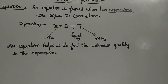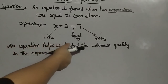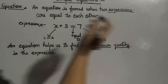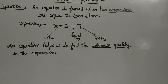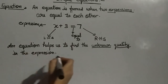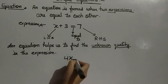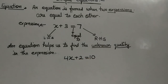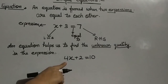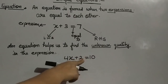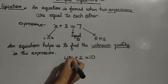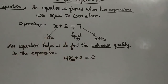The question is: why do we need an equation? An equation helps us to find the unknown quantity of the expression. Suppose I am writing 4X plus 2 is equal to 10. We know what is 4, 2, and also 10. So what is the unknown quantity here? X. X is the unknown quantity.